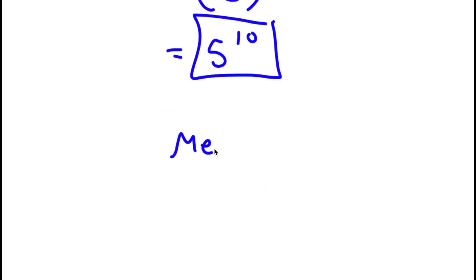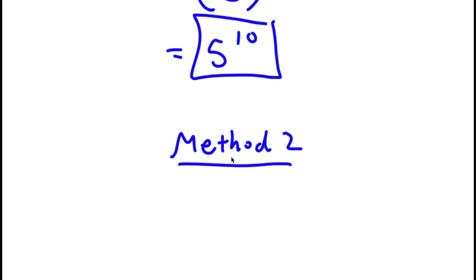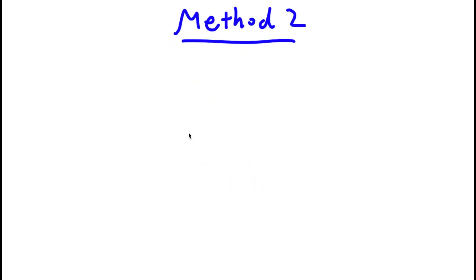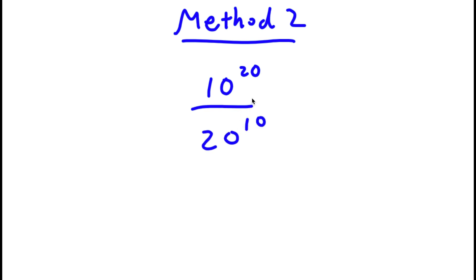Now I actually have a second method of solving this problem. So for Method 2, I start with 10 to the power of 20 over 20 to the power of 10. This time I'm going to rewrite the exponent 20 as 2 times 10. So now I have 10 to the power of 2 times 10.